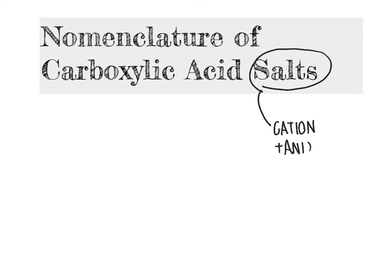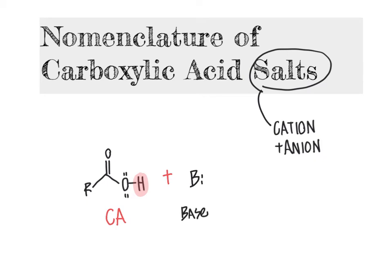We form a carboxylic acid salt by deprotonating a carboxylic acid, due to the fact that the carboxylic acid hydroxy group — the COOH group — has a proton that is relatively readily lost. What commonly occurs is that carboxylic acid will react readily with a variety of bases. That base will come in and use its lone pair of electrons to grab the proton from the carboxylic acid, forcing that oxygen-hydrogen bond to break.